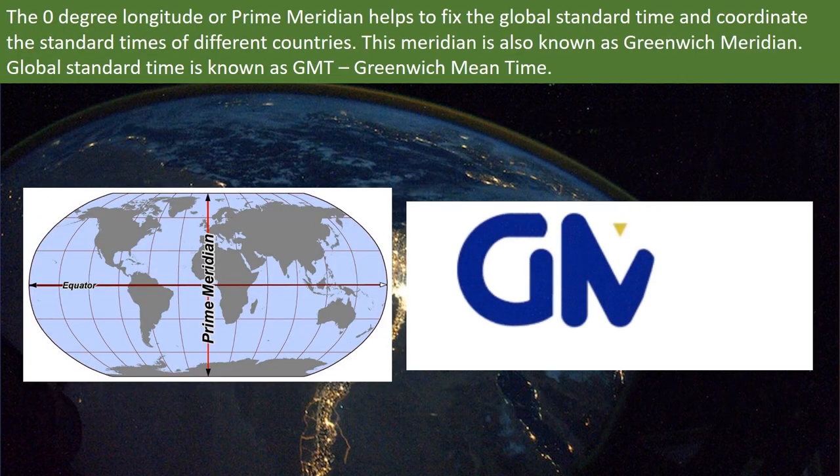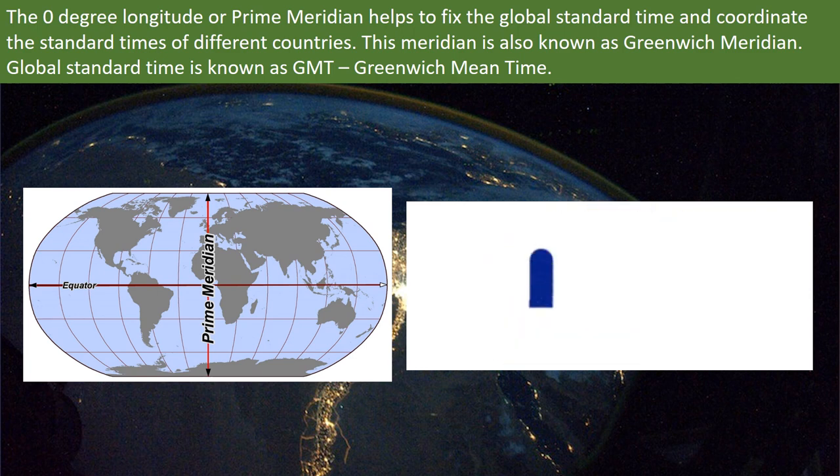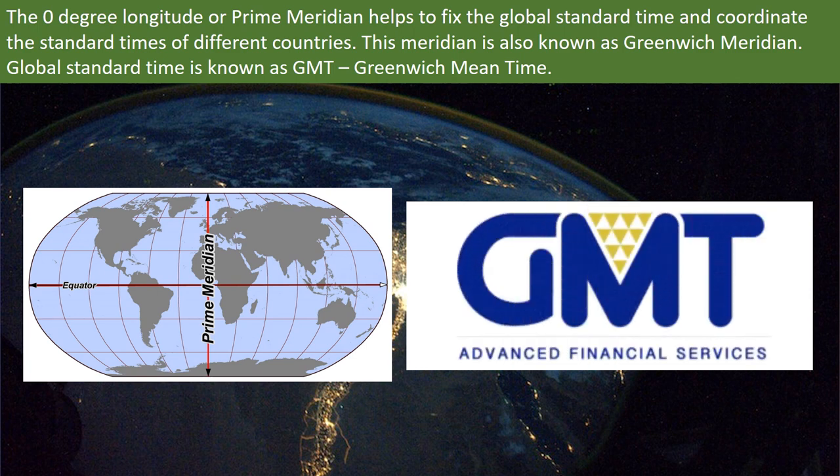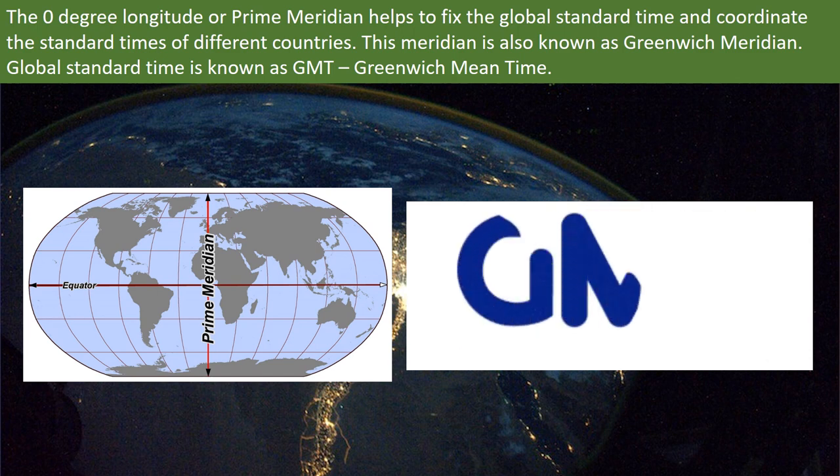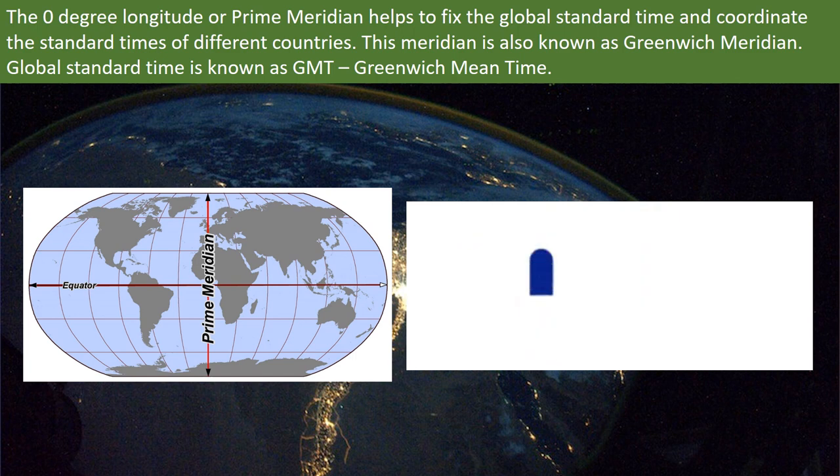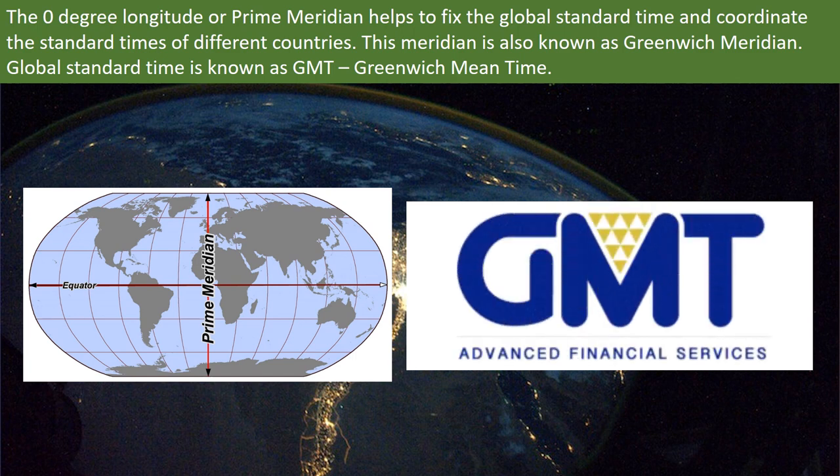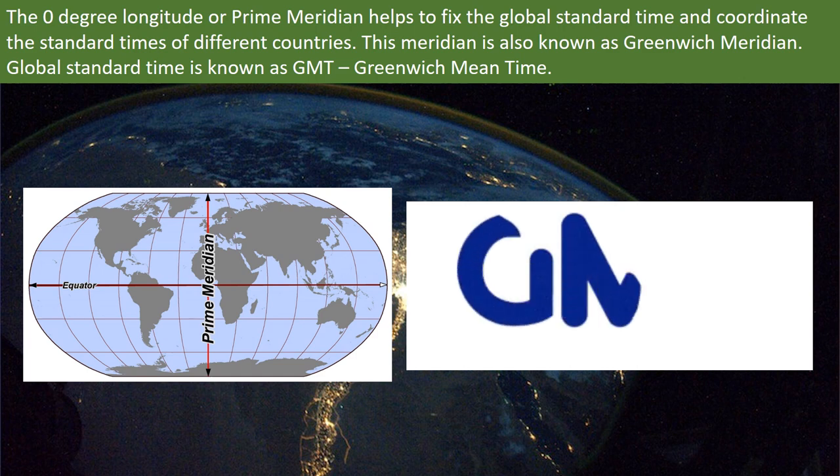The zero degree longitude or prime meridian is the imaginary line that divides the Earth into two equal parts, the eastern hemisphere and the western hemisphere. It is also called the Greenwich meridian because it passes through Greenwich, England. This meridian helps to fix the global standard time of different countries.